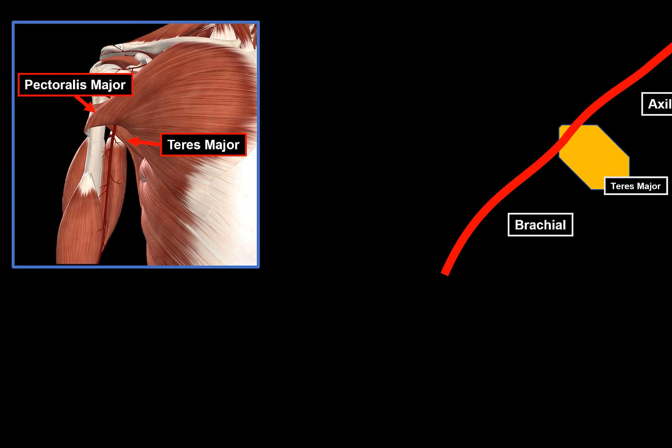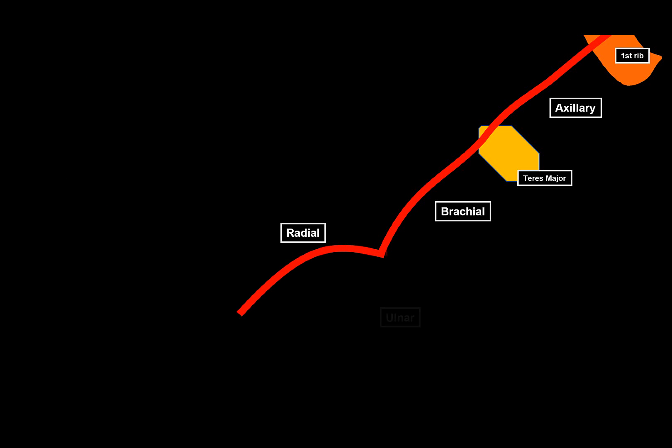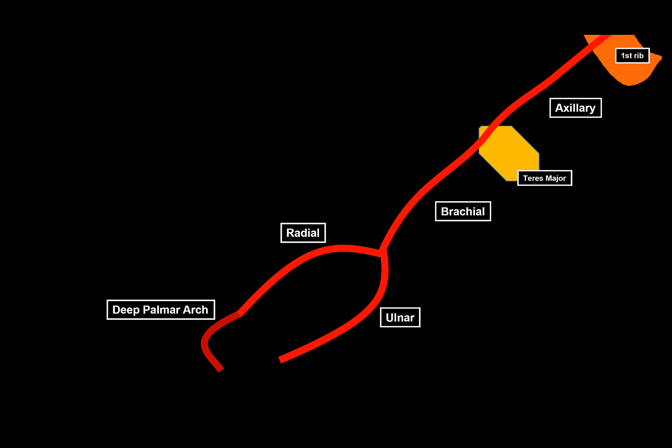The axillary artery passes through the axilla and when it reaches the lower border of the teres major, it continues as the brachial artery. This landmark varies by textbook — some sources state the free margin of the pectoralis major determines the border between the axillary and brachial artery; both are essentially correct. The brachial artery then splits into two terminal branches: the radial artery laterally and the ulnar artery medially. As they descend to the hand, the radial artery enters the dorsum then re-enters the palm as the deep palmar arch, while the ulnar artery enters as the superficial palmar arch.